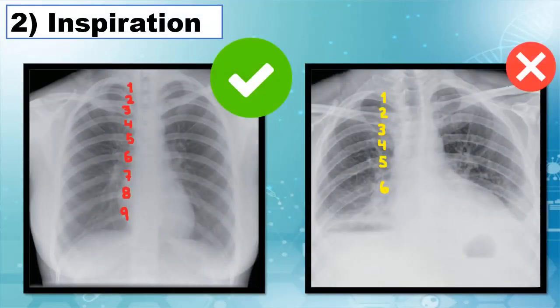Then we will focus on the inspiration. If our x-ray was taken with a patient exhaling or not inhaling enough, the organs within the chest will be compressed and we might get a false perception of them. In order to certify a good inspiration, we should always see 9 or 10 posterior ribs attaching to the vertebrae. Here we can see a case with poor inspiration that might, to a novice student, give the impression of being a cardiomegaly — which is not true, it just lacks enough inspiration.